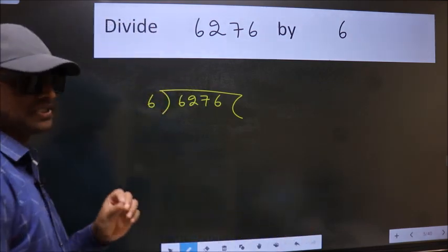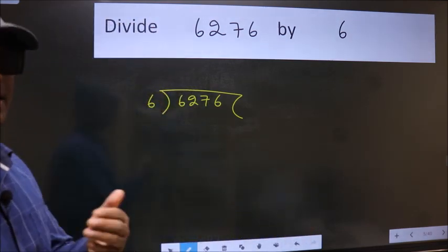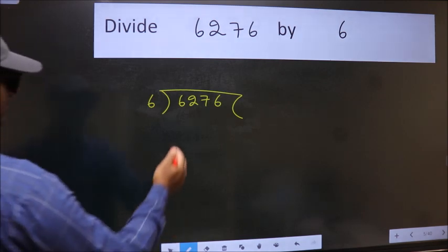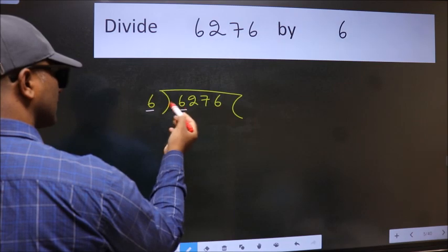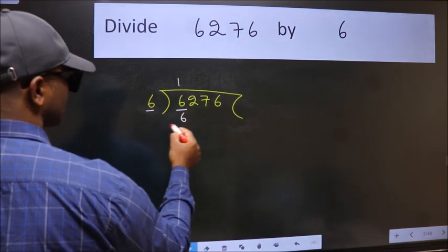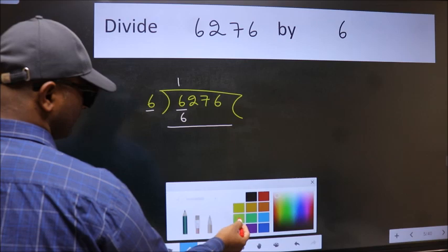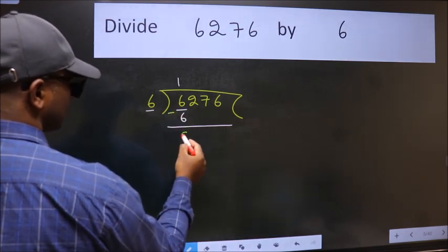This is your step 1. Next, here we have 6 and 6 here. When do we get 6 in 6 table? 6 once 6. Now we should subtract. We get 0.